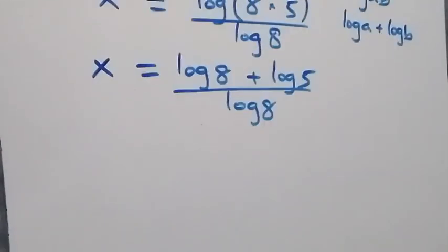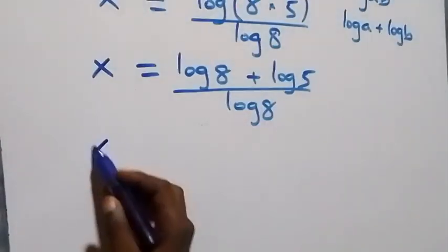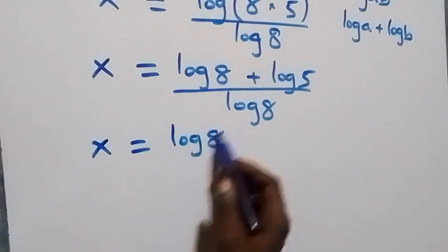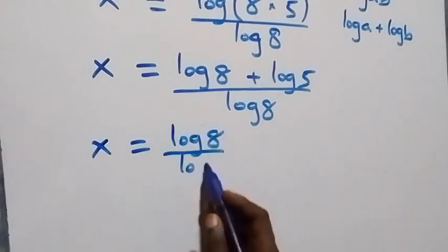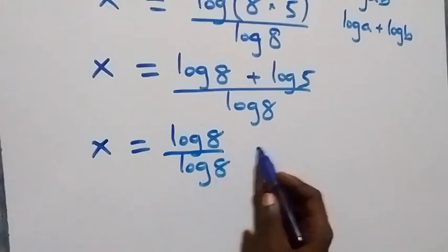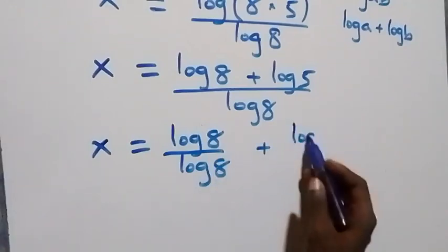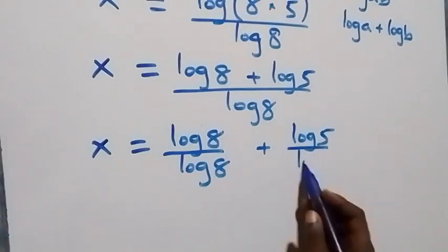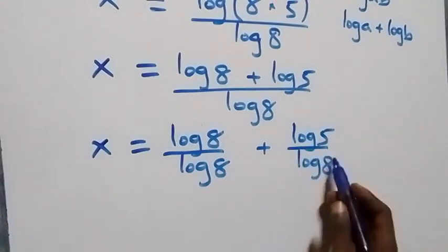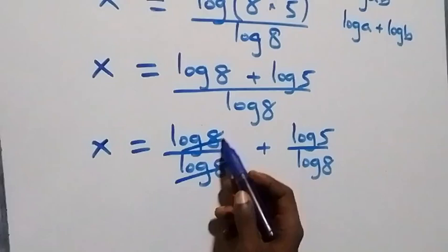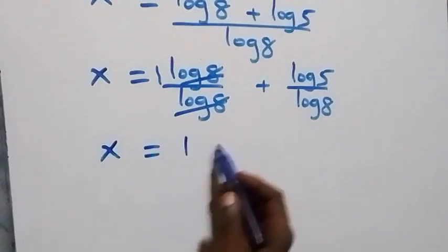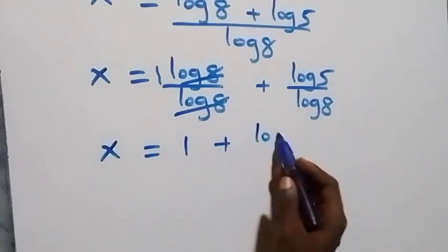We now have x equals log 8 over log 8 plus log 5 over log 8. The log 8 terms cancel to give 1, so x equals 1 plus log 5 over log 8.